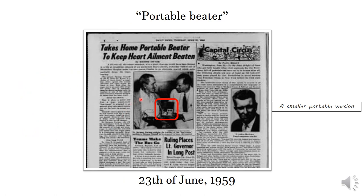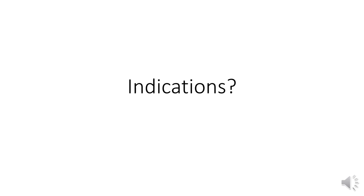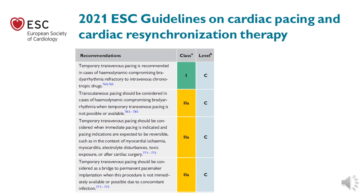This problem was partially solved one year later by inventing a smaller portable version of the pacemaker. So back to our topic — what is the indication for temporary pacing? According to the ESC guidelines for cardiac pacing, the indication for temporary transvenous pacing is recommended in specific cases.